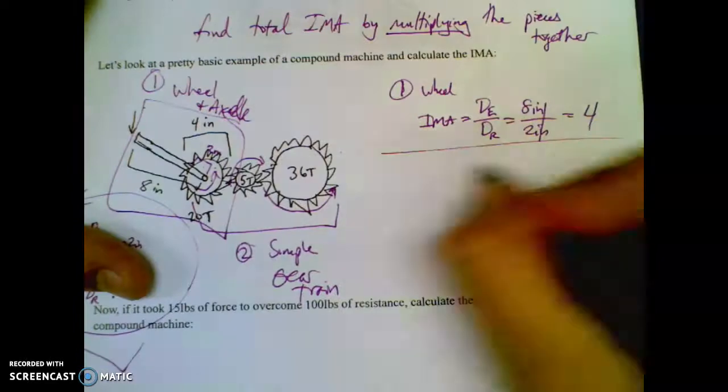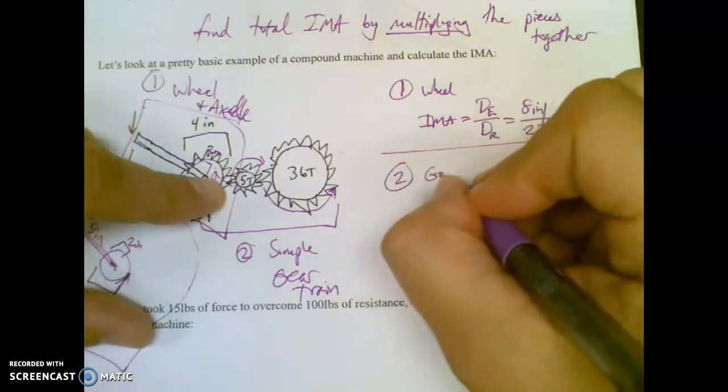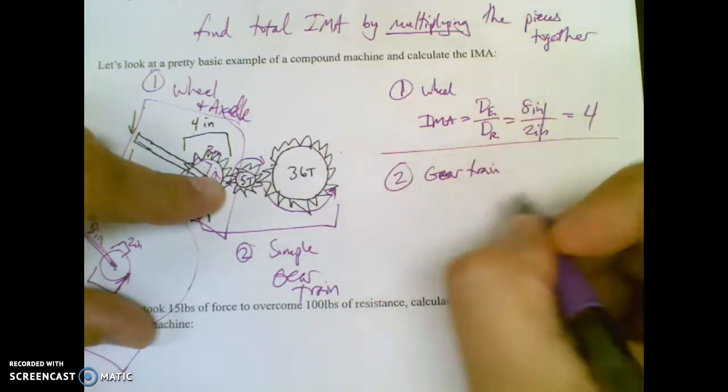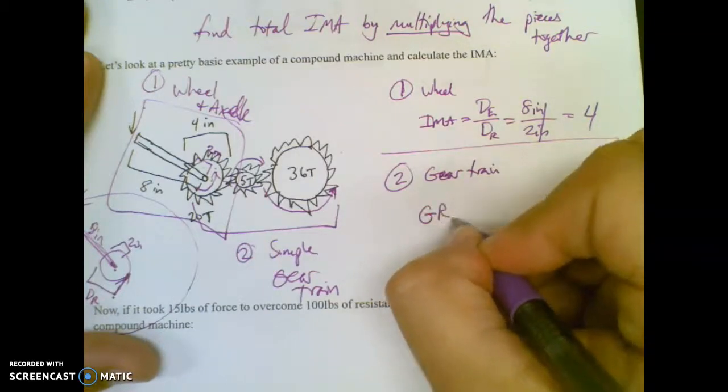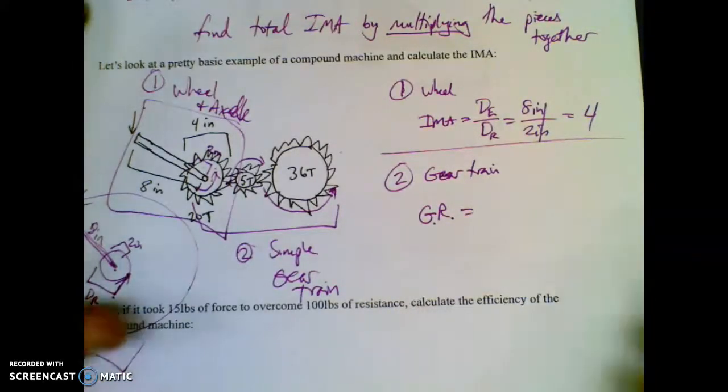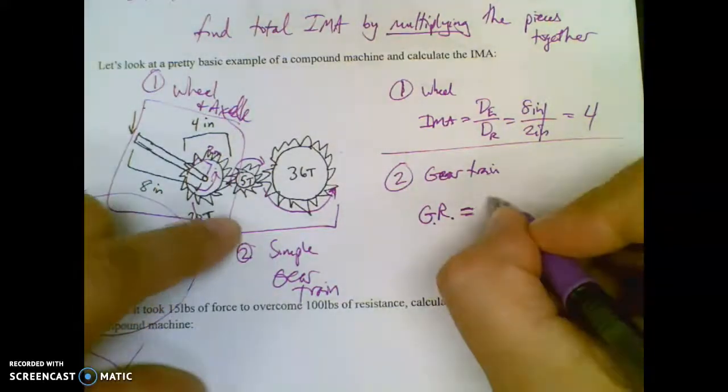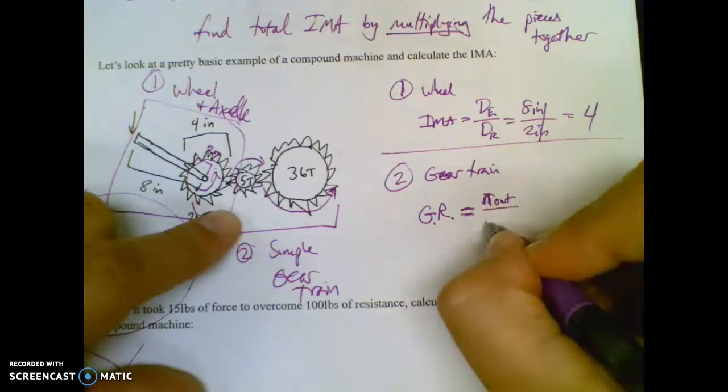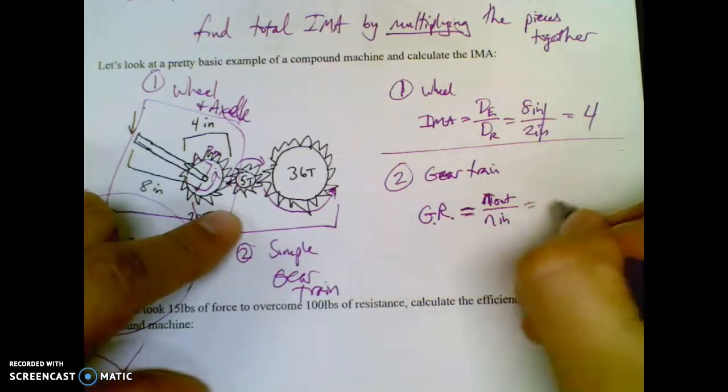Your second machine is a gear train, a simple gear train. And gear trains have a bunch of formulas, but basically gear ratio, which is kind of like the gear train's IMA, you can think of gear ratio as a mechanical advantage. It's teeth out over teeth in. It's N out over N in.